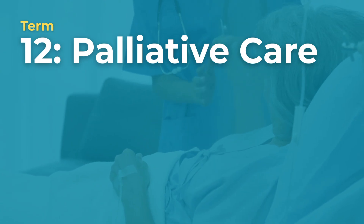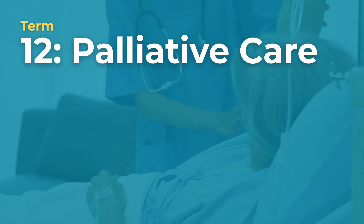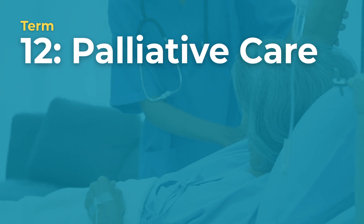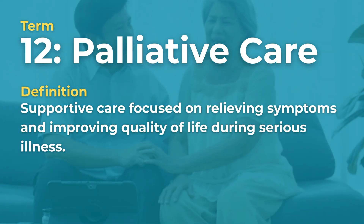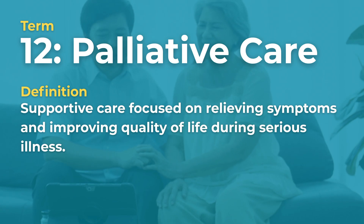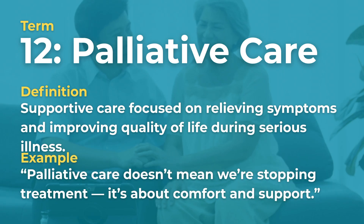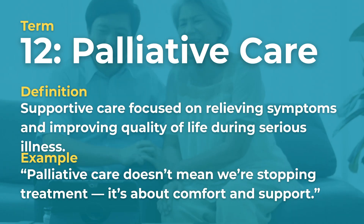Term number twelve is palliative care. Palliative care is supportive care focused on relieving symptoms and improving quality of life during serious illness. Example: 'Palliative care doesn't mean we're stopping treatment — it's about comfort and support.'